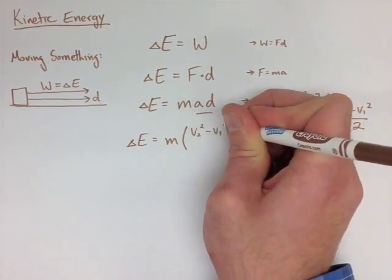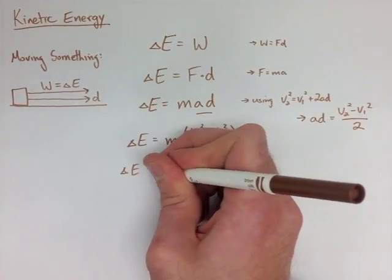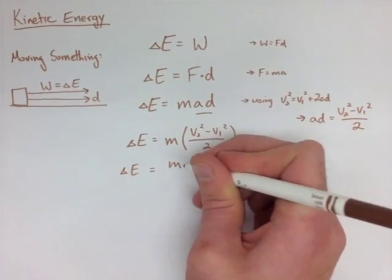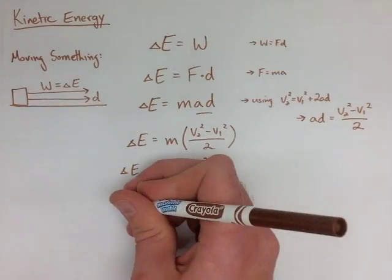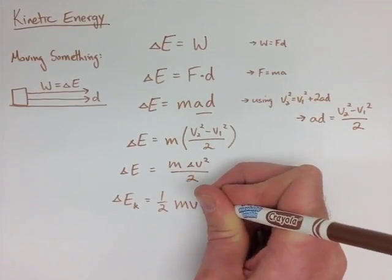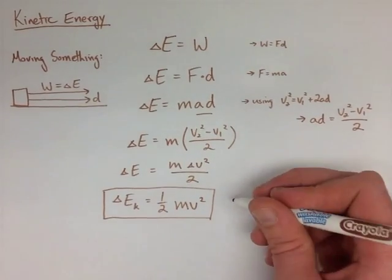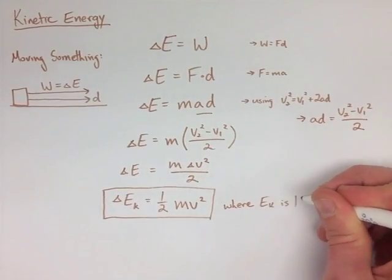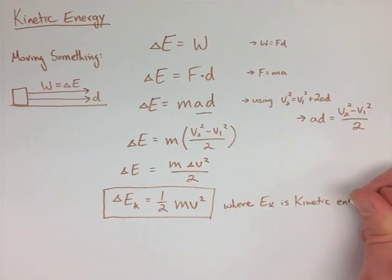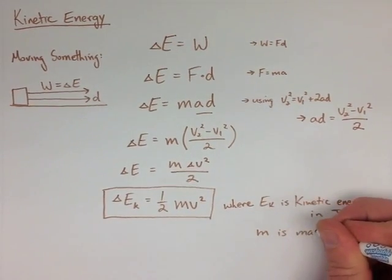When we substitute this in, we have V₂² - V₁² over 2, but we can change that to mass times the change in velocity squared over 2. Now, remembering that we're always dealing with V₁ being zero, we can make the formula ½mv² equal our kinetic energy, because V₂ minus zero would just be V₂, where V is our velocity.